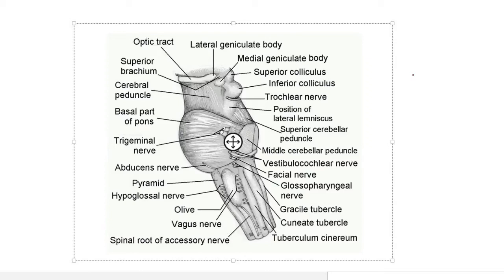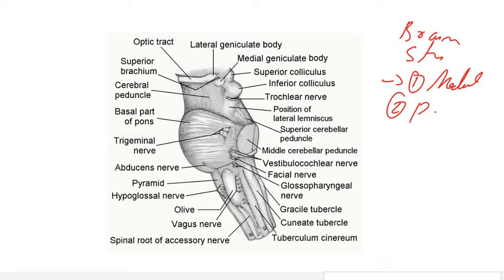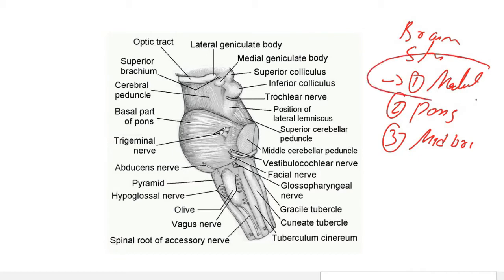Hi guys, this is Saurabh and today we're going to see the medulla. The medulla is a part of the brainstem, and the brainstem is made up of three structures: the medulla, the pons, and the midbrain. In this lecture we're going to cover the medulla only.